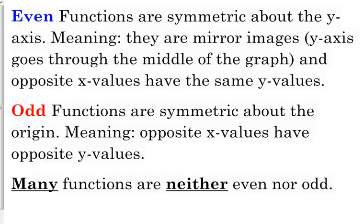For example, x squared is an even function. The absolute value of x is an even function. Here's the important part: opposite x values, like x equals negative 3 and x equals positive 3, have the same y value. Negative 3 over here, positive 3 over here have the same y value. It's that mirror image quality there.